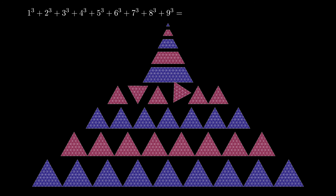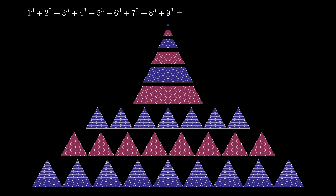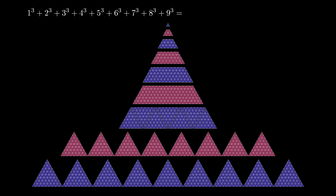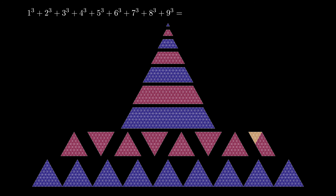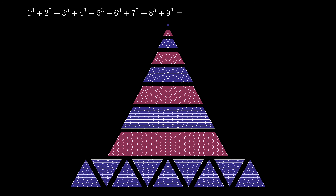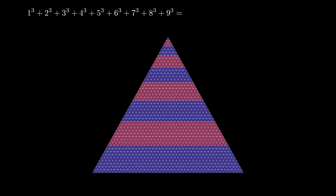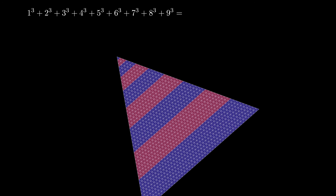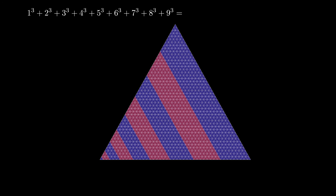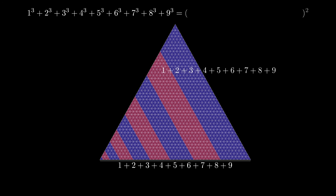We can continue doing this on each row: odd rows, we only rotate triangles; even rows, we rotate all the triangles except the last one, where we perform this special operation. At the end, we have a large stack of trapezoidal arrays of equilateral triangles, and they fit together perfectly to form one large triangular array. If we look at this triangular array from a rotated perspective, we see that the side length is given by the sum of the first nine positive integers. So this large triangular diagram represents the square of the sum of the first nine positive integers. By rearranging stacks of triangular arrays into one large triangular array, we've seen Nicomachus' theorem again in action for the year 2025.